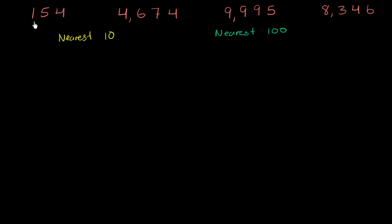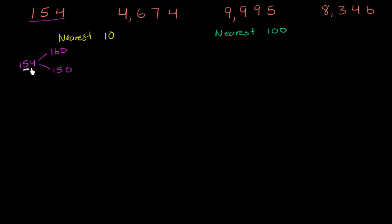Let's start with 154. What is the multiple of 10 above 154? Well, it's 160. And the multiple of 10 below 154 is 150. So we're going to round up to 160 or down to 150. When we're rounding to the nearest 10, we need to look at the ones place — one place to the right of the place that we're rounding. We look at this four in the ones place. Since four is less than five, we round down to 150.